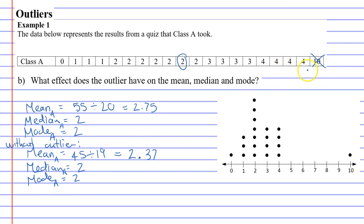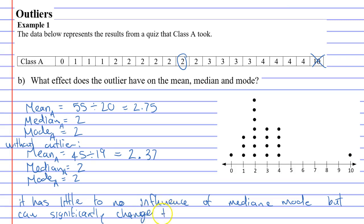So what you notice is when we got rid of the outlier, the median and the mode remained unchanged. And that's the good thing about median and mode, that they're not really influenced by the outlier. Sometimes they can be a little bit, but most of the time they are not. But the mean is quite heavily influenced by the outlier. It can make a big difference on the mean. So for question B, we'll say it has little to no influence. I mean, in this case, it had no influence, but sometimes it can. It has little to no influence on median and mode. But can, because it doesn't always, but can significantly change the mean. Can significantly change the mean.